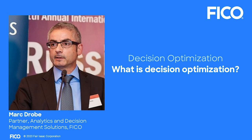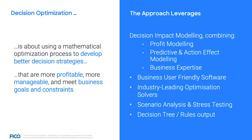I would like to start off with a few fundamentals describing the approach of decision modeling and optimization using artificial intelligence. Hopefully that will also help you to better understand when Peter is talking about what he did and what results he achieved. Decision optimization is about using a mathematical optimization process to develop better decision strategies, focusing on decisions rather than on models only. Those decision strategies should ideally be more profitable, more manageable, and meet business goals and constraints.